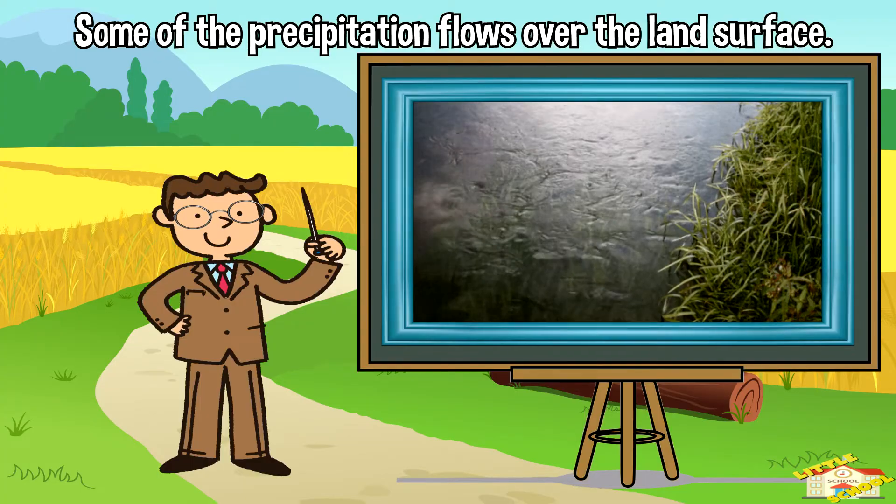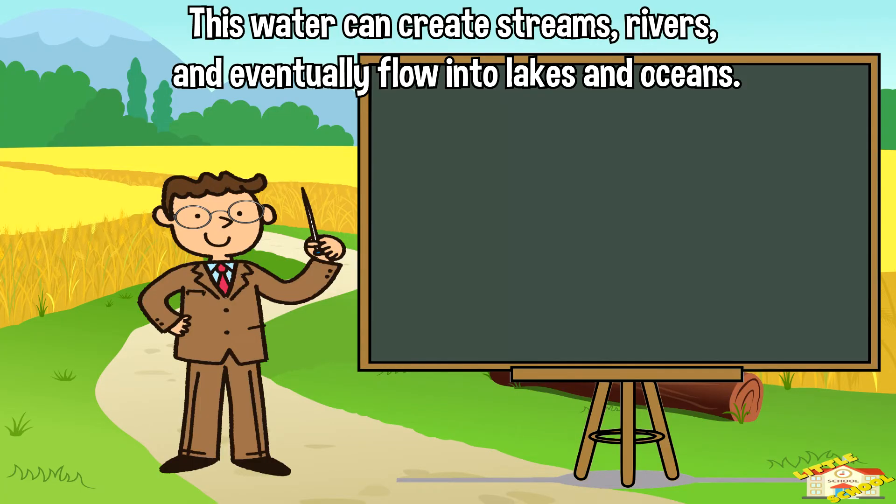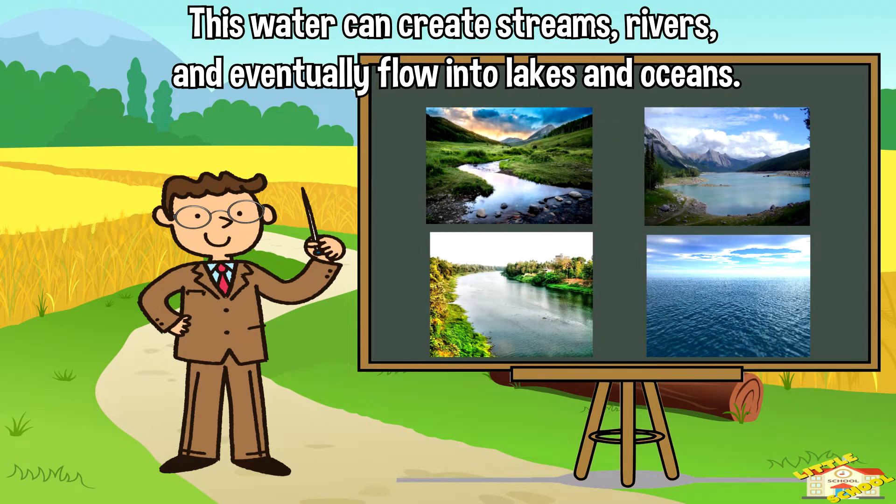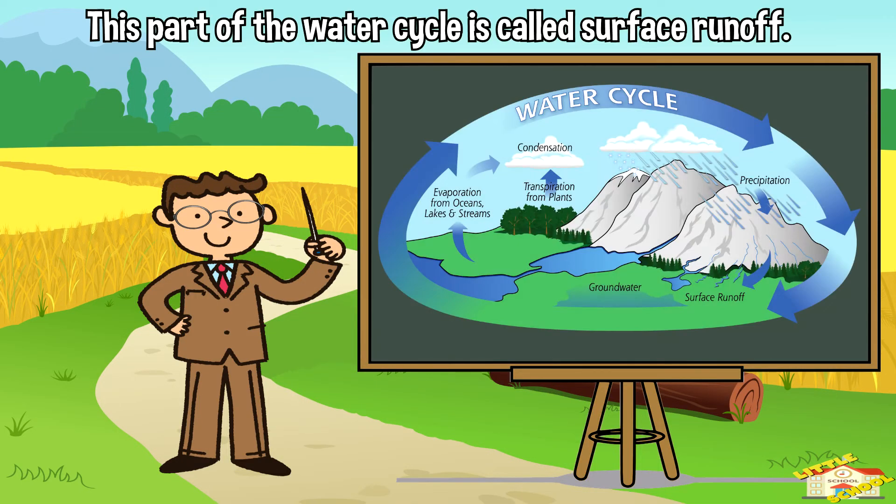This water can create streams, rivers, and eventually flow into lakes and oceans. This part of the water cycle is called surface runoff.